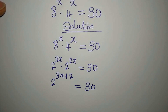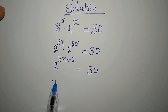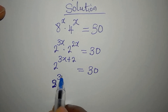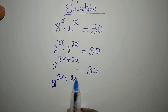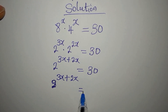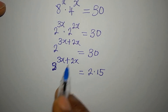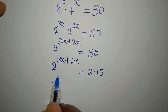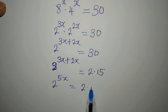Now, we cannot write 30 with base 2 directly, but we can break it down. So we get 2 to the power of 3x plus 2x being equal to 30, which is 2 multiplied by 15. Adding the powers gives us 2 to the power of 5x equals 2 multiplied by 15.